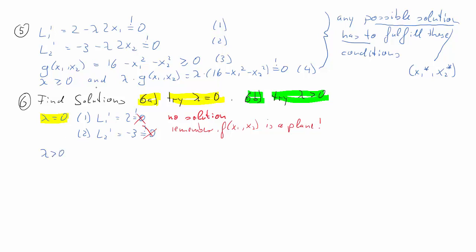Therefore we continue to the case where lambda is greater than 0. We take partial derivative equation 1 and solve for lambda, getting lambda = 1/x₁. For equation 2, solving for lambda gives negative 3 over 2x₂.